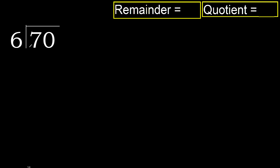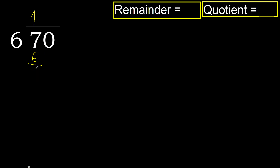70 divided by 6. 7 is not less, therefore work with 7. 6 multiplied by which number is nearest to 7 but not greater? 6 multiplied by 2 is 12 — that's greater. 6 multiplied by 1 is 6 — not greater. 7 minus 6 is 1.